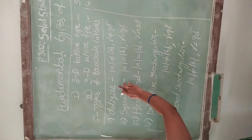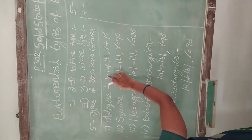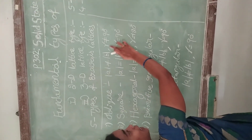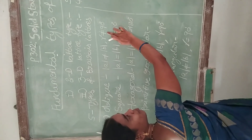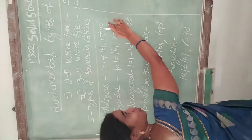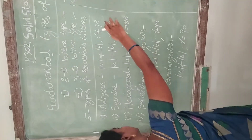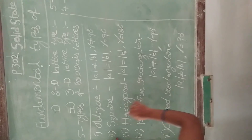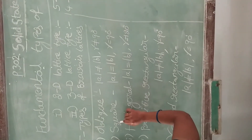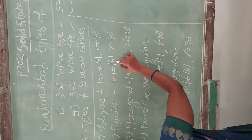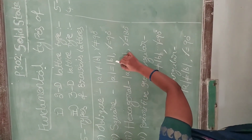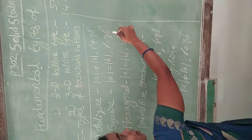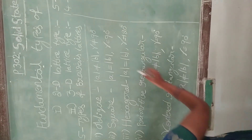First one: oblique lattice. The condition is A is not equal to B, and the angle gamma is not equal to 90 degrees. Second one: square lattice. Here the primitives A is equal to B, and the angle gamma is equal to 90 degrees.